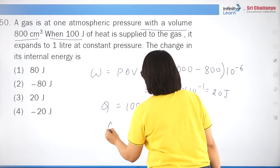Question 18: coordinates of a moving particle are x = αt³ and y = βt³. Differentiating: vx = 3αt² and vy = 3βt². Net speed = √(vx² + vy²) = √(9α²t⁴ + 9β²t⁴) = 3t²√(α² + β²), which is option 4.